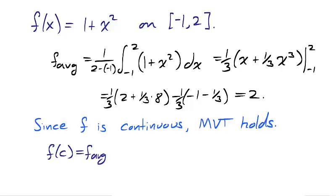Now as f is continuous, the mean value theorem for integrals guarantees a value c in the interval for which f of c is equal to the average value. Setting f of c equal to 2, we solve for c to obtain c is equal to negative 1 or 1, both of which lie in the interval.